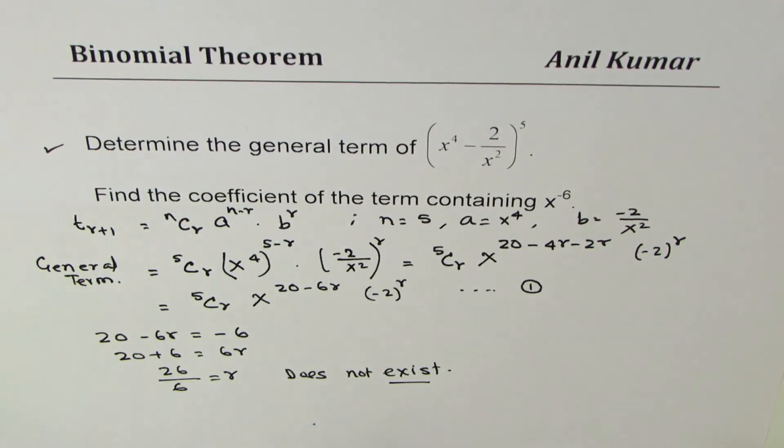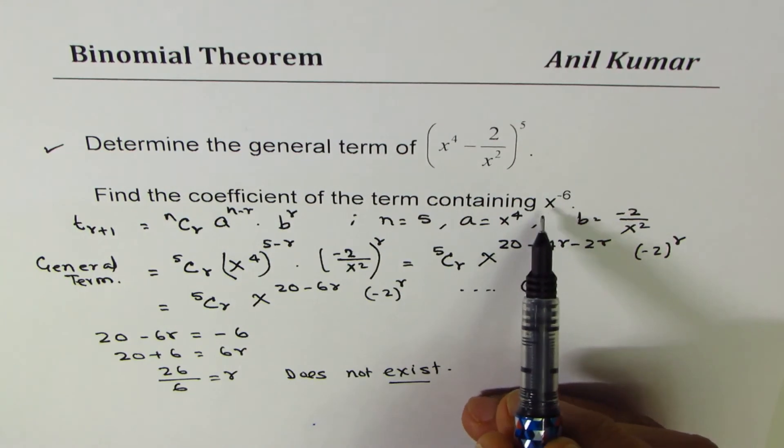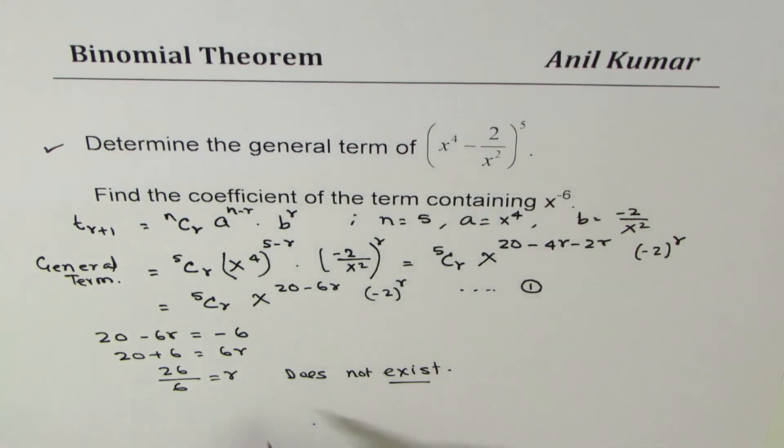In this case, there is no term which will have x^(-6). Therefore, the answer is: no term will have x^(-6).